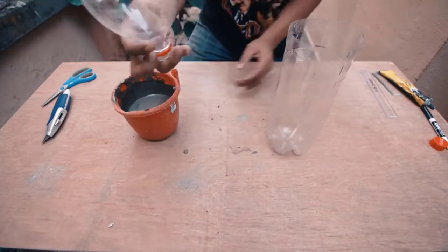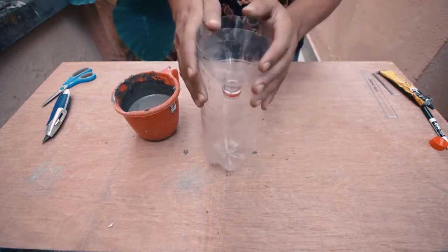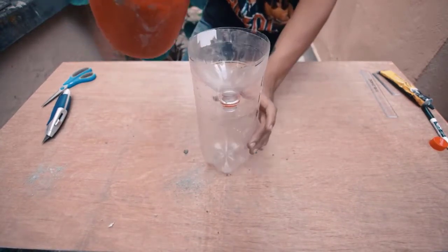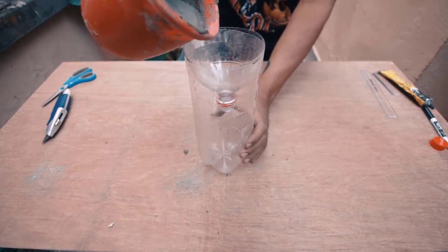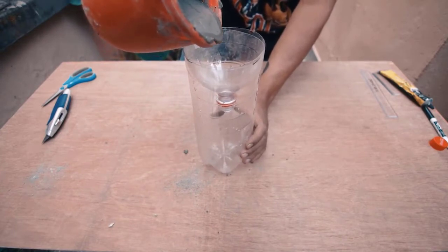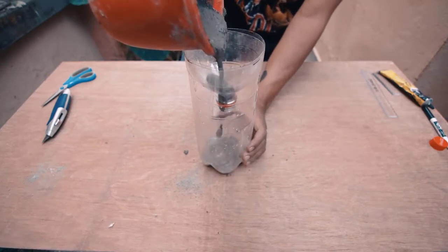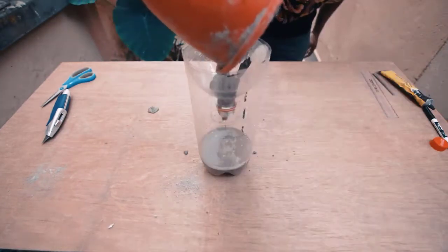Now we're going to use the lid of the rain gauge to funnel the mixture of sand and cement in. It's really important at this point that you have the gauge on a level surface and that you slowly add the mixture of sand and cement up until the reference line that we've been using at the bottom of the gauge.